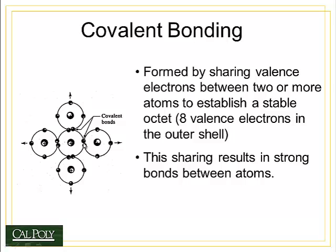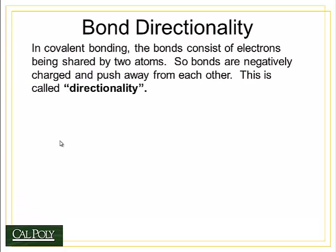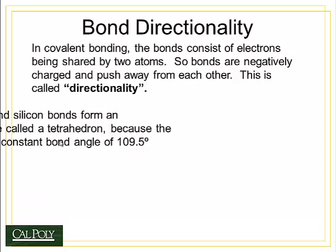This stable configuration results in very strong bonds, because any individual carbon atom cannot afford to lose one of these eight electrons in its outermost shell — otherwise it becomes less stable. Covalent bonds have another important property called bond directionality, which is caused by the fact that the electrons within the covalent bonds tend to occupy a specific region around the atom. The bonds are negatively charged and push away from each other.